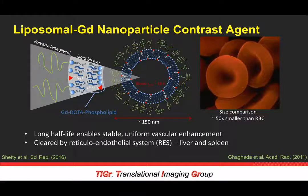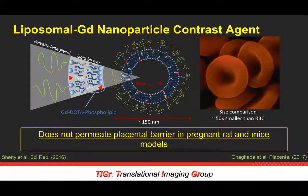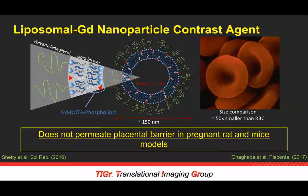Its size is also of importance. It's quite small — 50 times smaller than a red blood cell — and it allows for a clearance mechanism through the reticuloendothelial system, the liver and spleen, which helps prevent accumulation issues with gadolinium. Specifically, we have engineered this nanoparticle agent to not permeate the placental barrier in pregnant rat and mice models, which is a critical development for utilizing gadolinium in fetal imaging and for looking at placental disorders.